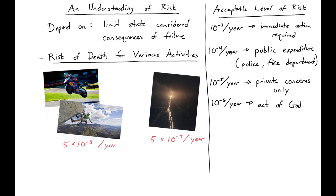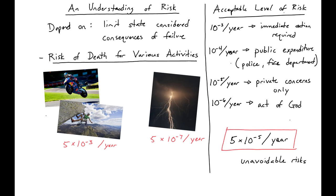So if we're talking about what a maximum acceptable level of risk is, generally we'll say that 5 times 10 to the negative fifth deaths per year is the level of unavoidable risk. You can't really avoid going into a building, so this is the level that we shoot for in engineering.